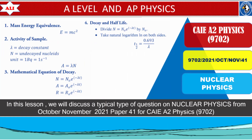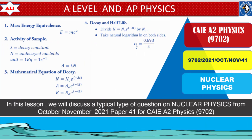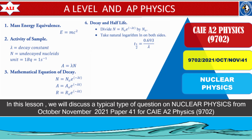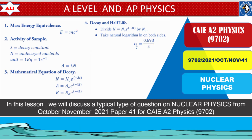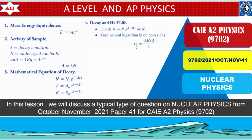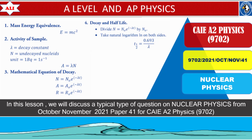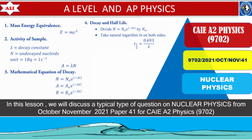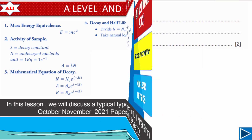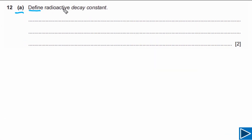Welcome to A Level and AP Physics. In today's lesson we will discuss an important past paper question on nuclear physics from October/November 2021 Paper 4 Variant 1. In this question we will discuss how to define radioactive decay constant and how to calculate the radioactive decay constant for a given sample. Part A is asking us to define radioactive decay constant.